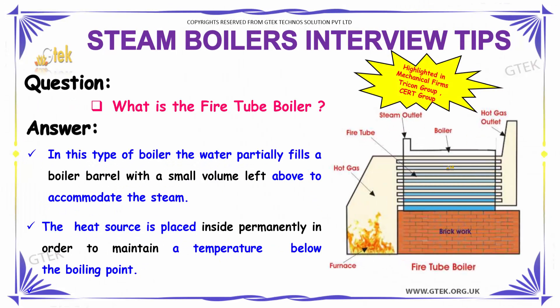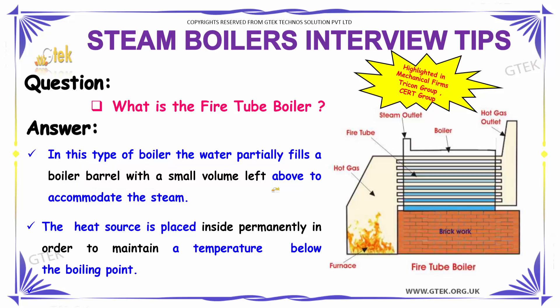The next question is: what is the fire tube boiler? In this type of boiler, the water partially fills a boiler barrel with a small volume left above to accommodate the steam. The heat source is placed inside permanently in order to maintain a temperature below the boiling point.